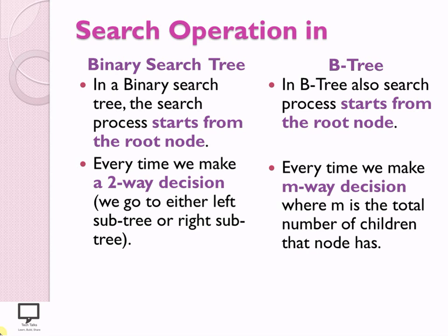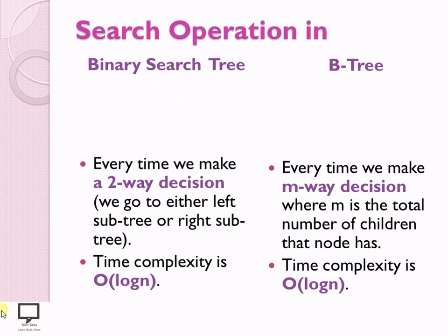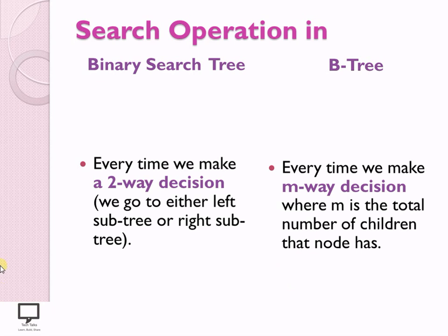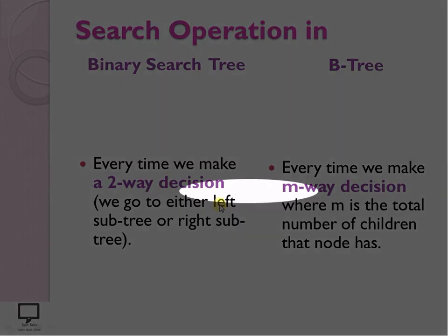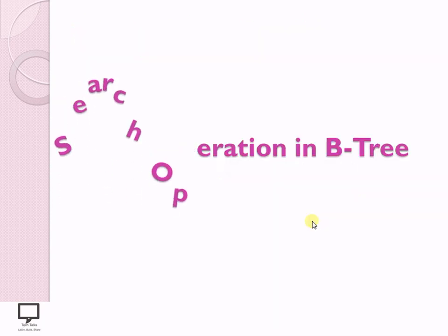I need to decide: go with the first child, second child, third child, or Mth child. This is the only difference between both the trees. The time complexity for both search operations is the same — O(log N). In binary search tree we take a two-way decision, but in B-Tree we take an M-way decision because M number of children are there.